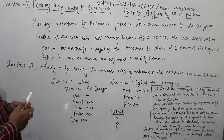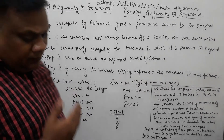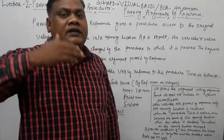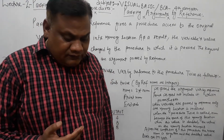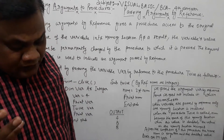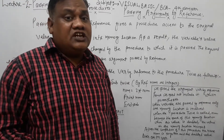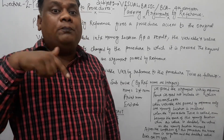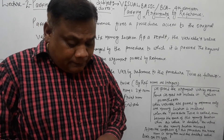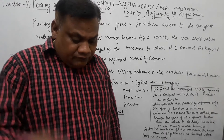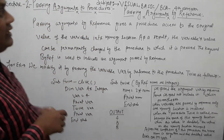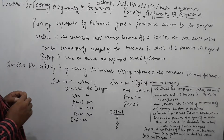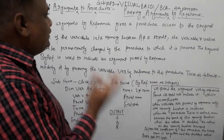So, first of all, we have Passing Argument to a Procedure — Passing Argument by Reference. When we pass the argument by value, we pass a copy of the variable to the procedure. If the procedure changes it, the change affects only the copy, not the variable itself.